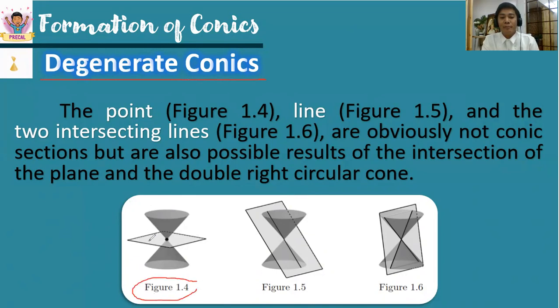Just try to imagine it as a bond paper cutting the double right circular cone. Observe figure 1.4. If the bond paper intersects the vertex, then we form a geometric figure, which is a point.